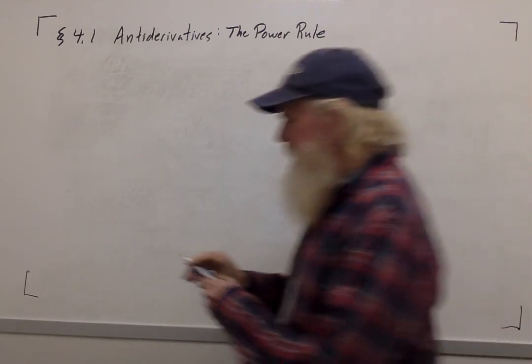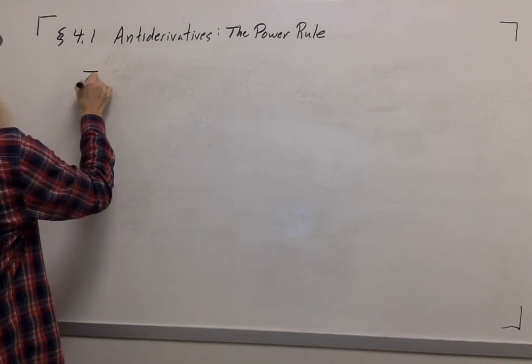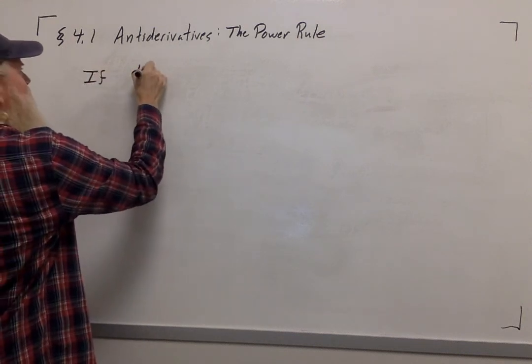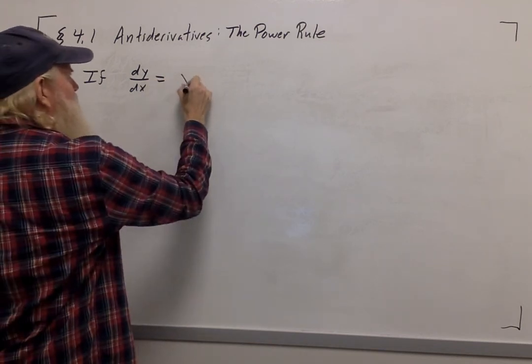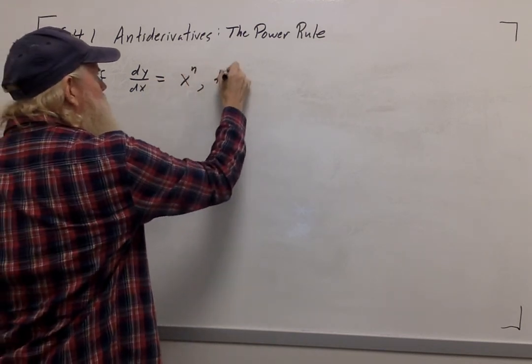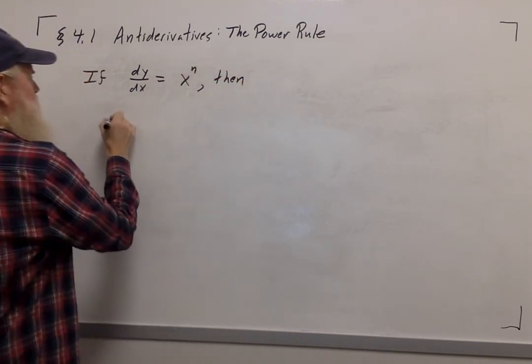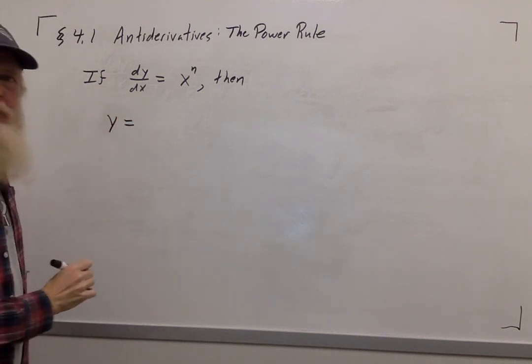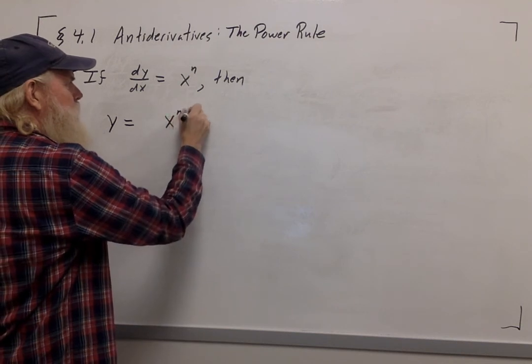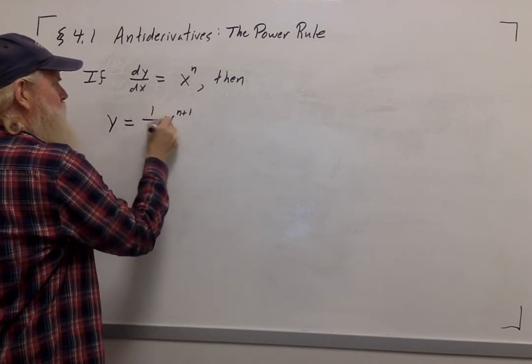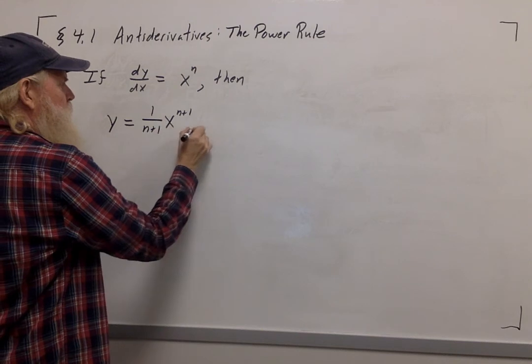So this is called the power rule. It says this: If the derivative of y with respect to x is equal to x to the n, then y is equal to x to the n plus 1 times 1 over n plus 1.